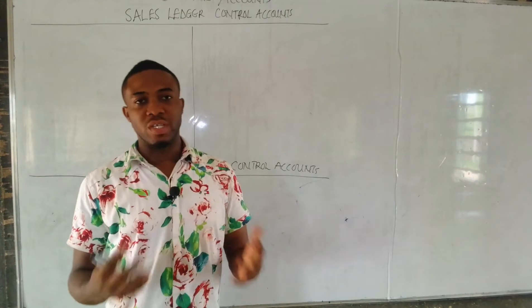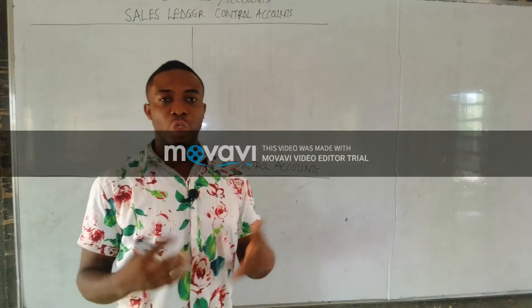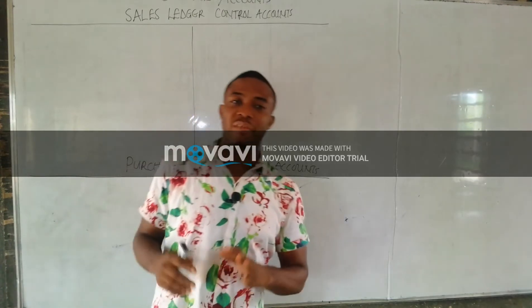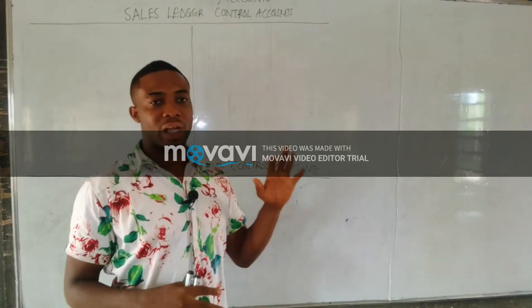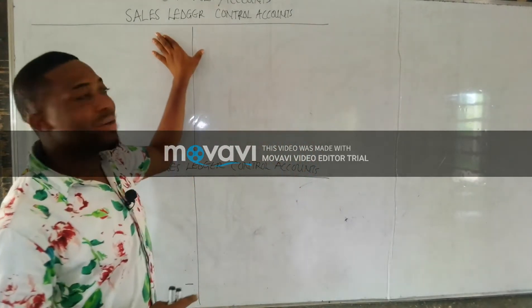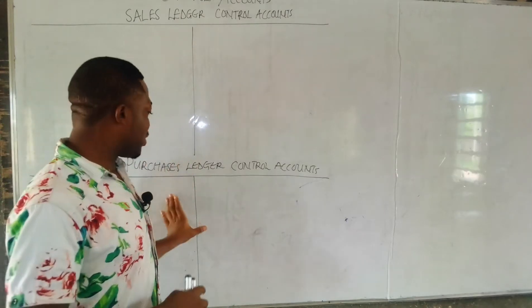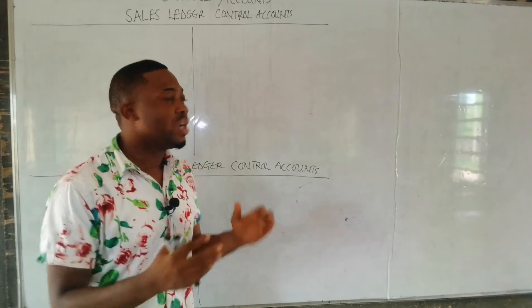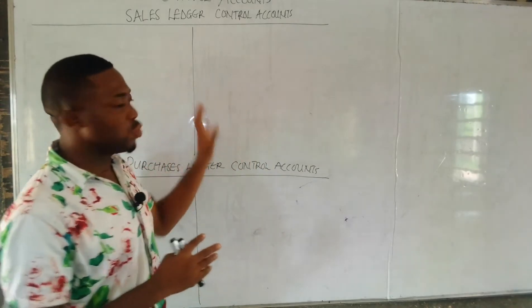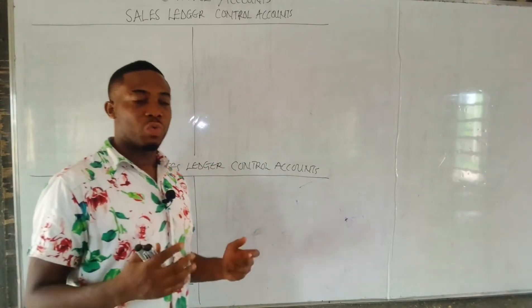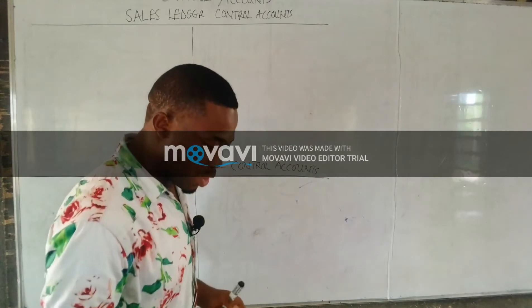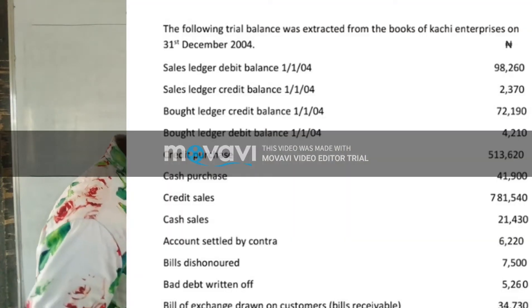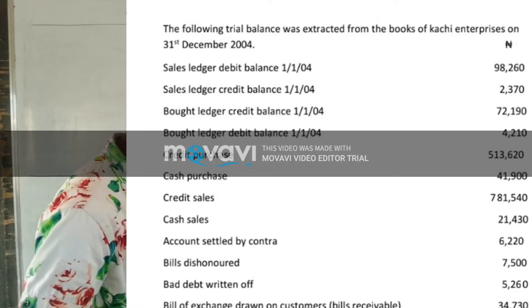Today we want to solve a practical question on how to solve the control account. I would advise that whenever you're doing a question relating to control accounts, please write out the sales ledger and the purchase ledger simultaneously, so when you start solving, you can post to whichever one applies.